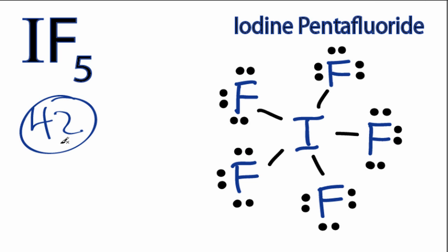We've used 40 valence electrons. We had 42 to start out with. All the fluorines have octets. Iodine is in period 5 on the periodic table, so we can have more than 8 valence electrons. Let's just put that last pair on the iodine here.